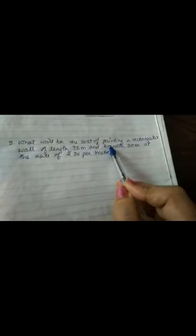Next question similar type. What will be the cost of painting a rectangular wall of length 75 meters and breadth 30 meters at the rate of 20 rupees per meter. Now it is the same type of sum which we did before but now it is a cost of painting a wall. Painting a wall means will you find the area or the perimeter? We will find the area because for painting we will paint the full wall.